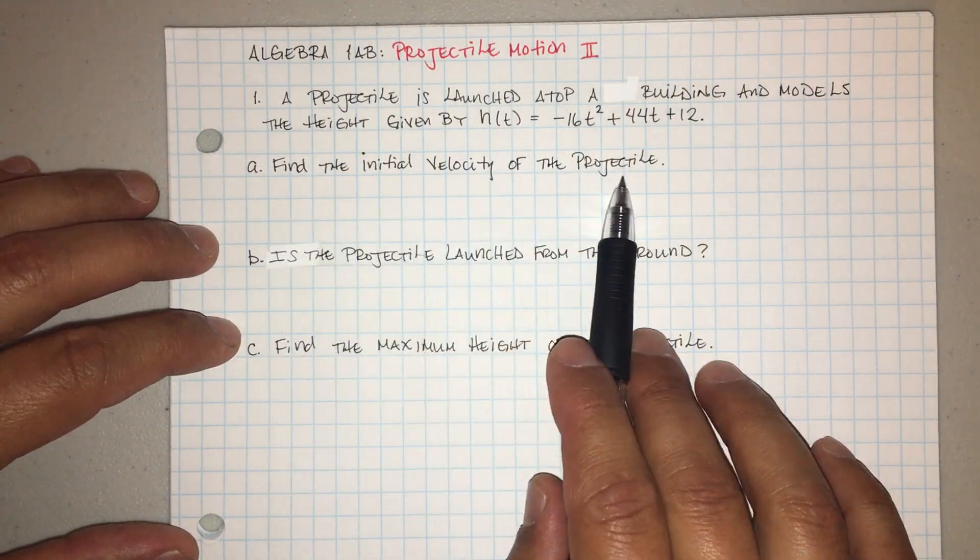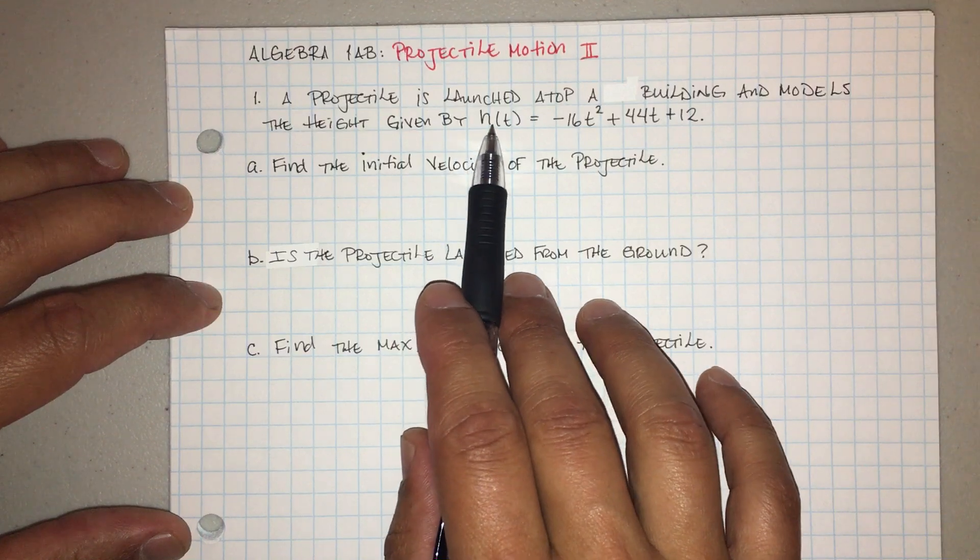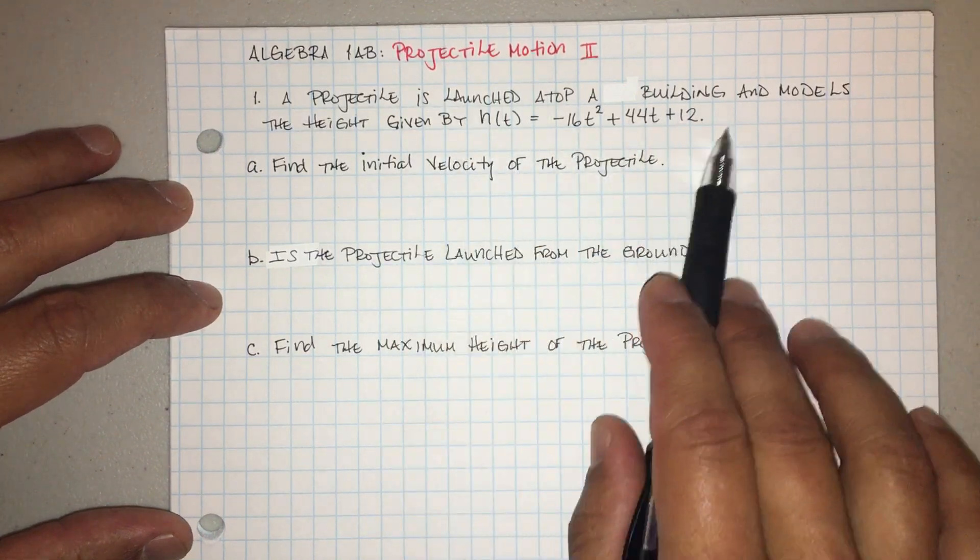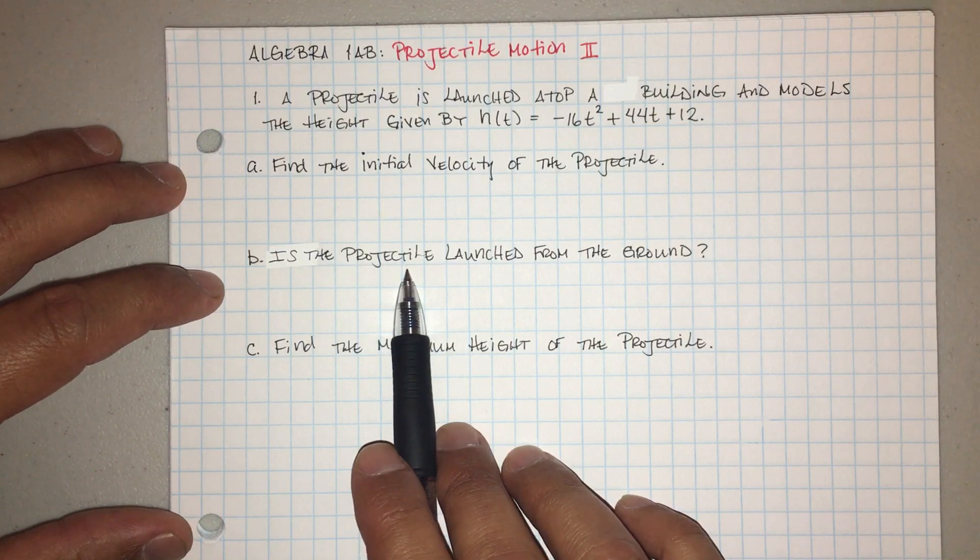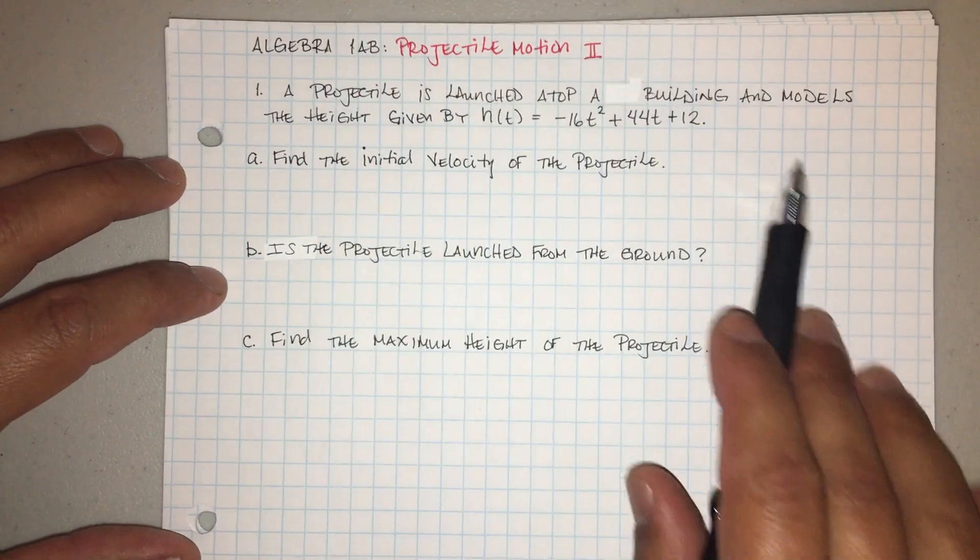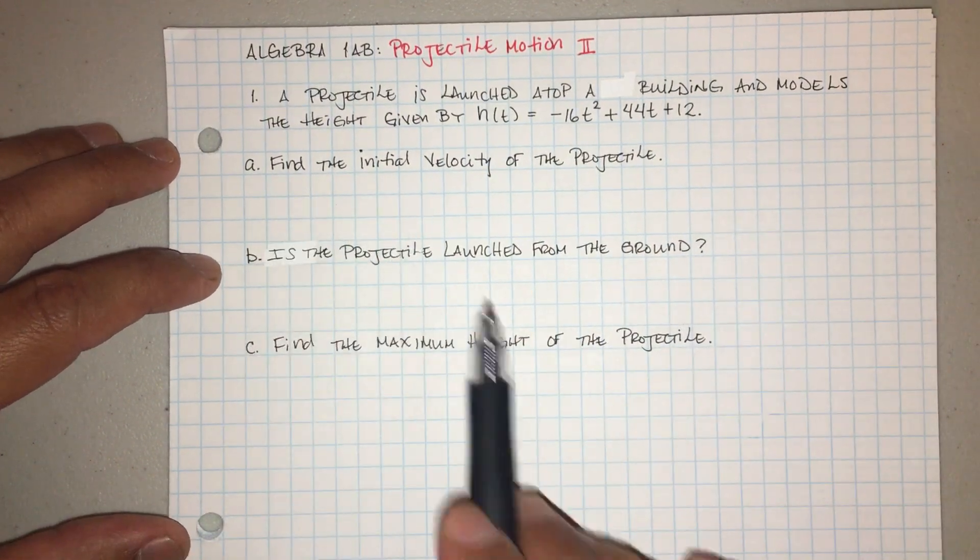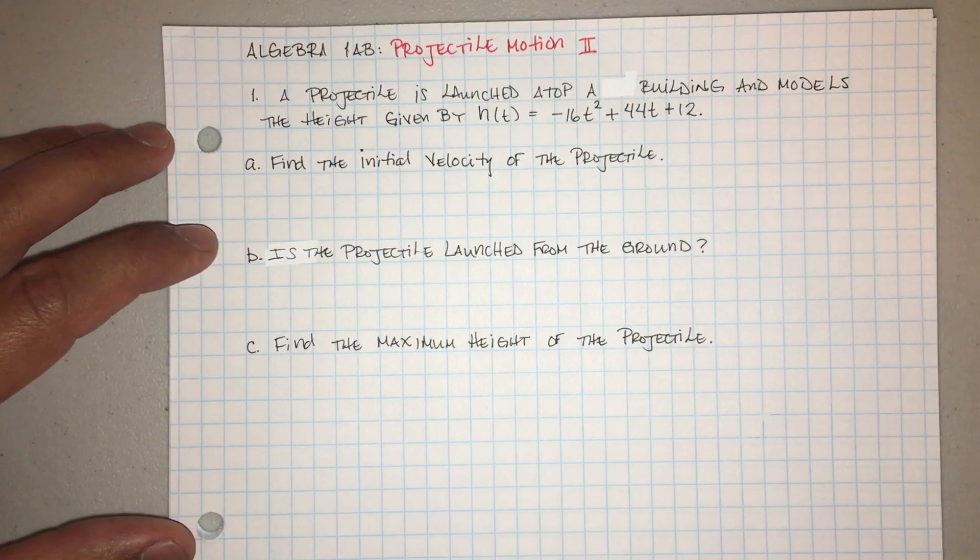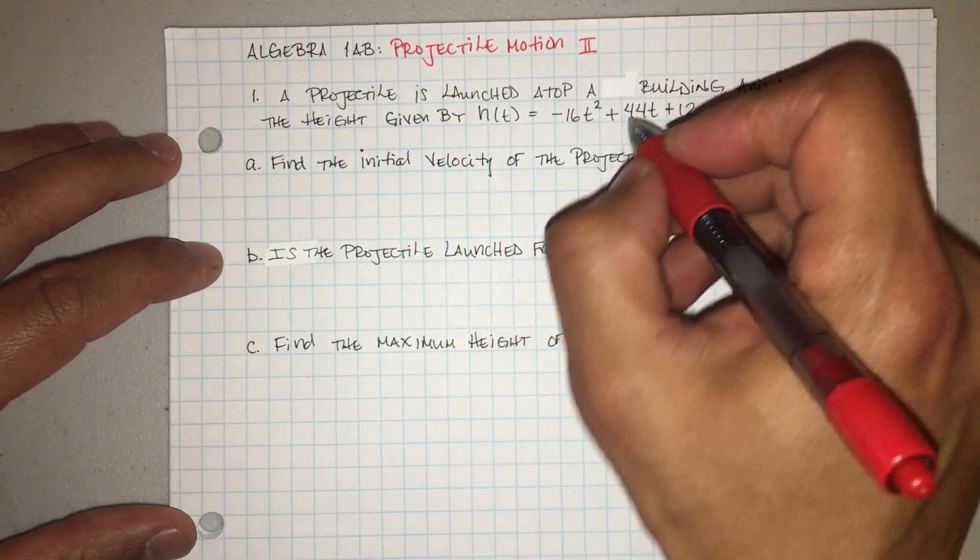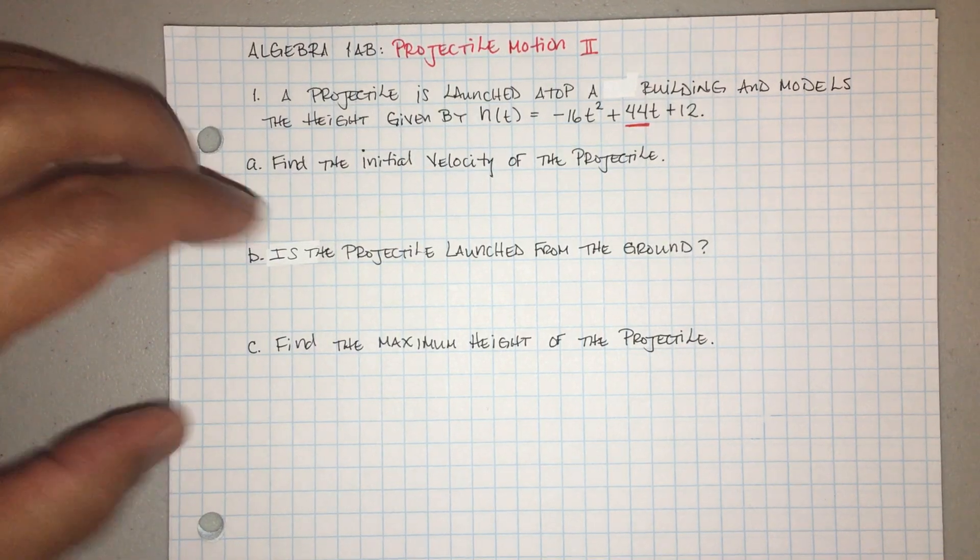And it says find the initial velocity of the projectile. Entonces tenemos un proyectil que tiene esta ecuación aunque está arriba de un edificio. Find the initial velocity of the projectile. Encuentra la velocidad inicial del proyectil. Y eso viene de acá. And that comes from right here guys, 44. Now usually the negative 16, that's your gravitational constant in feet per second.